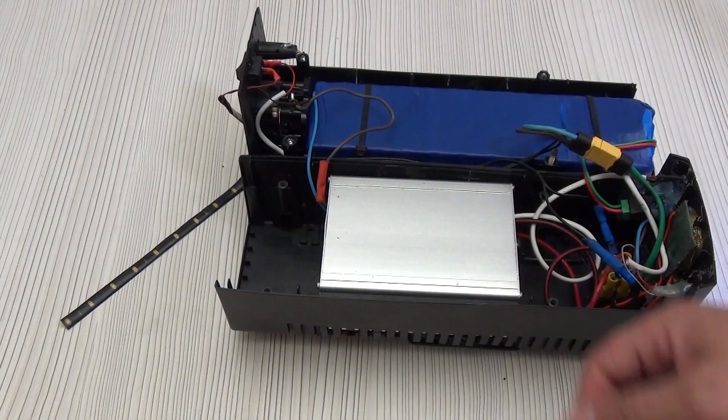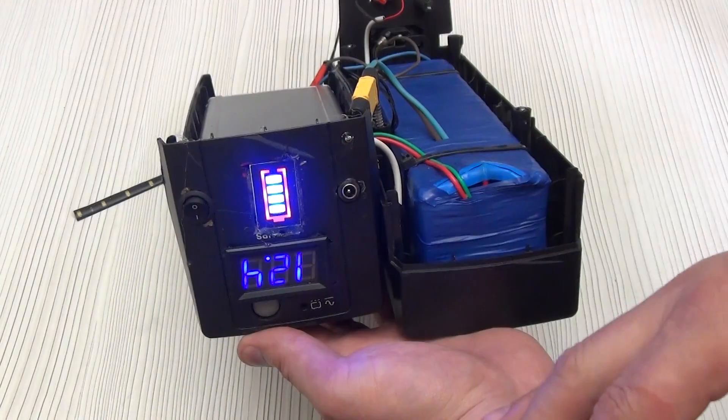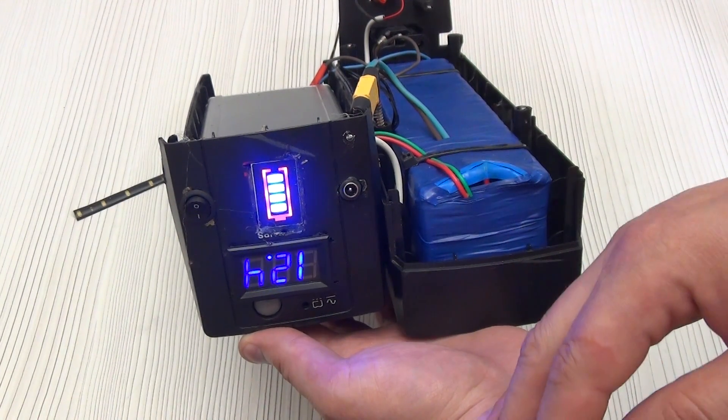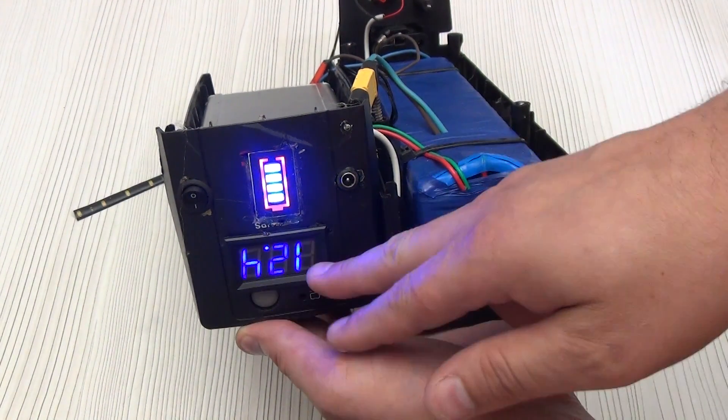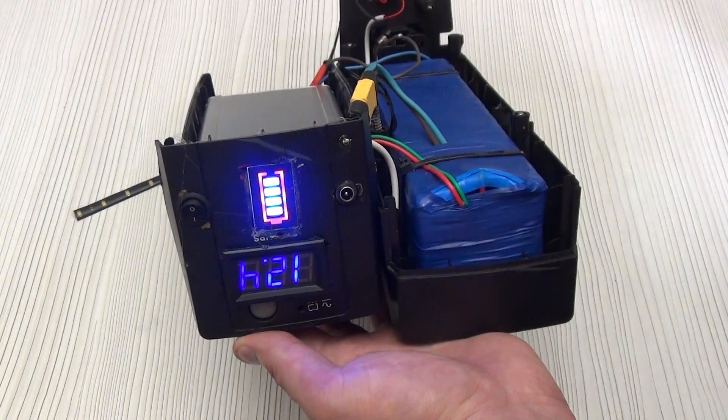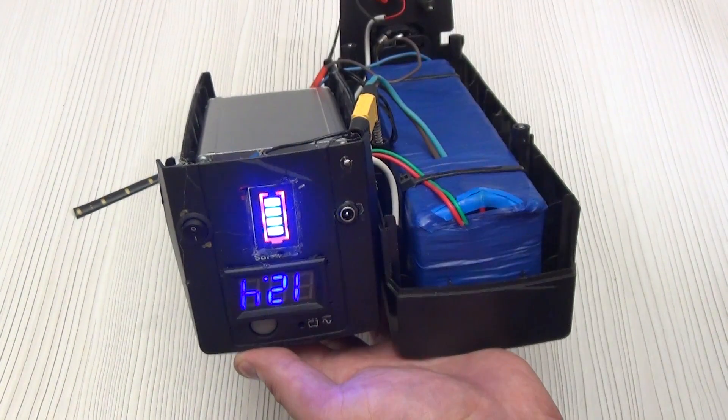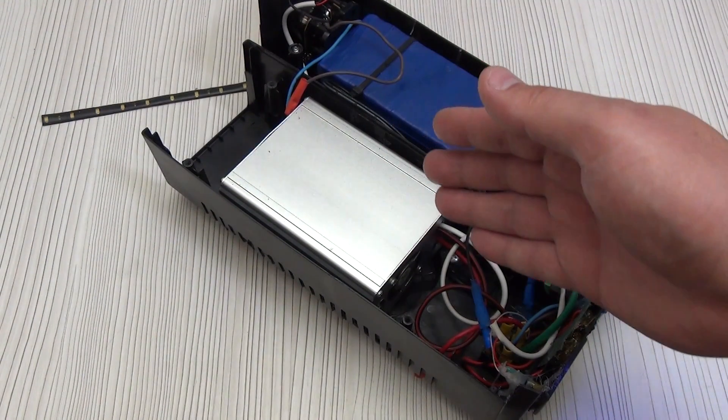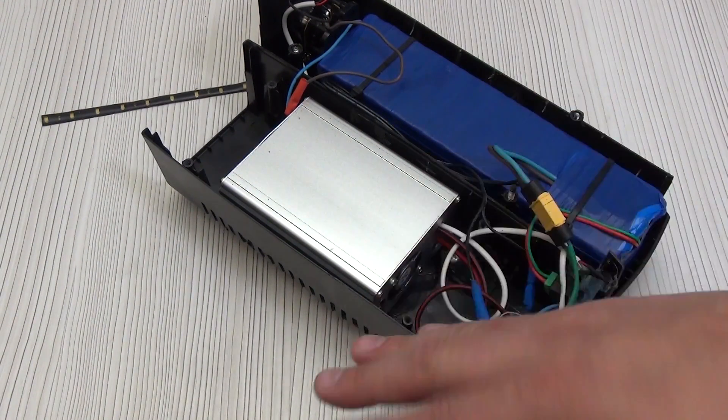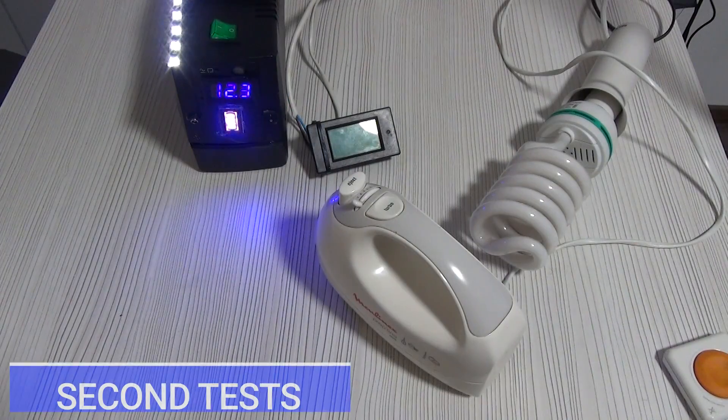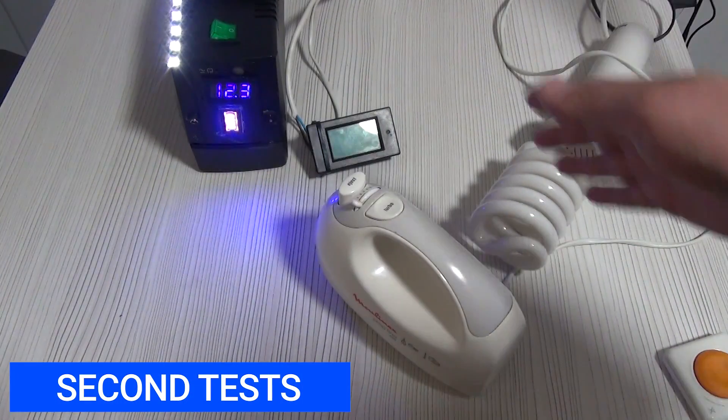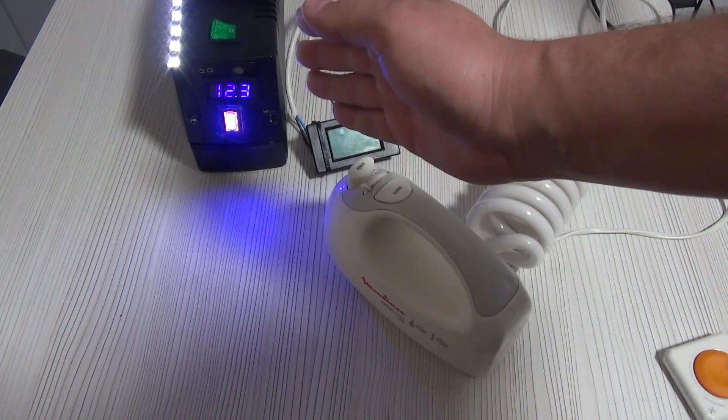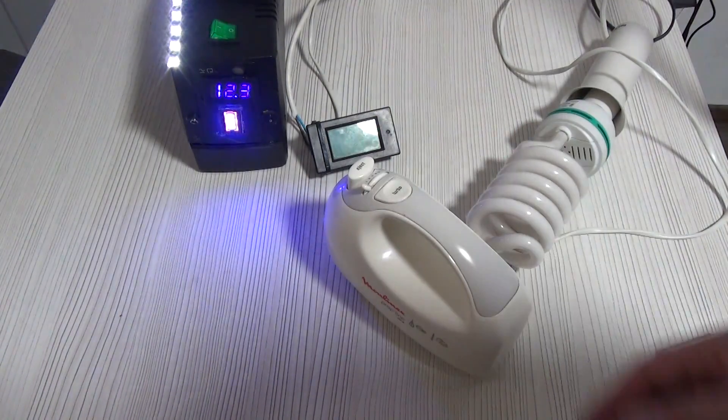Here it also displays 12.4, although in fact 12.6 volts. If you buy, buy voltmeters with the ability to adjust. I will give the link in the description under the video. The sound became louder, but for 3 weeks of daily work there are no problems. Let's do some tests. We'll have a lamp, 2 light bulbs and a mixer. In fact, the wiring here is not rated for 300 watts, so a sag is possible.